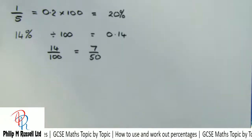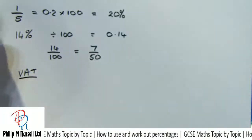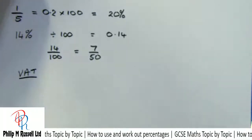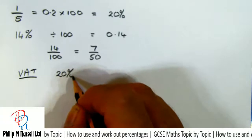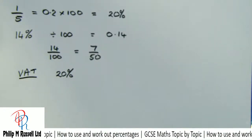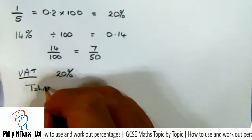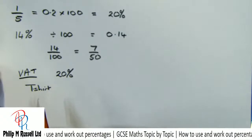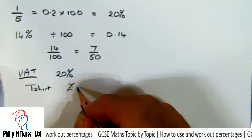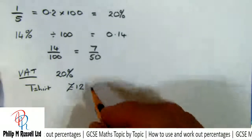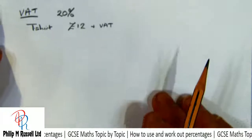Let's have a look at a problem with VAT. VAT used to be 17.5%, which was awkward. Now VAT is 20%, so much easier to work out. Let's suppose we buy a t-shirt that costs £12 plus VAT.